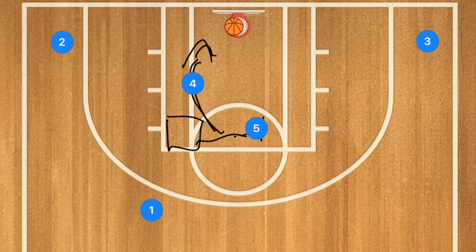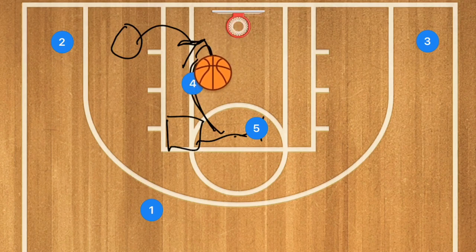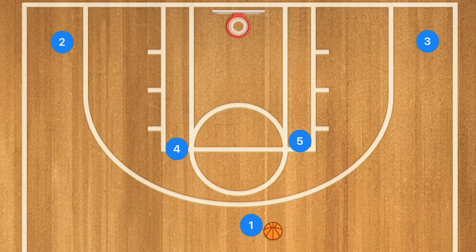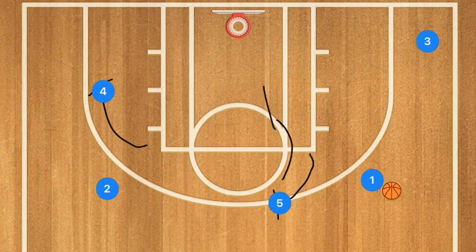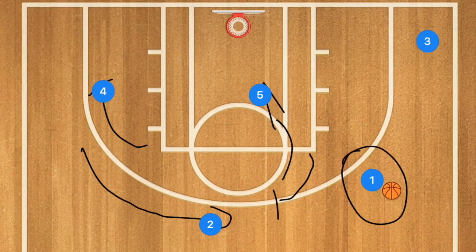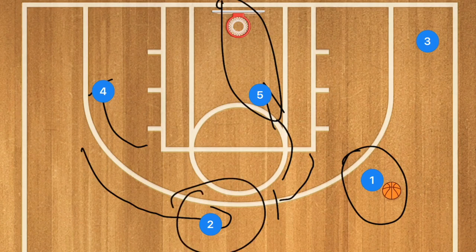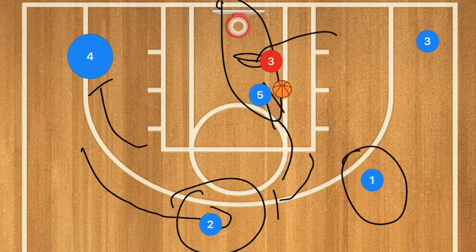The idea for that layup down low is for the defensive player to come down to help out, and for player four to then kick out to player two as a backup option. Another play you'd see off the Horn's offense is a screen and roll with player five and player four setting a screen down low for player two. Player one would use that screen, player five would roll towards the basket, and player two would pop up top — giving player one multiple options including a kick-out to player four or player three for a three-point shot.